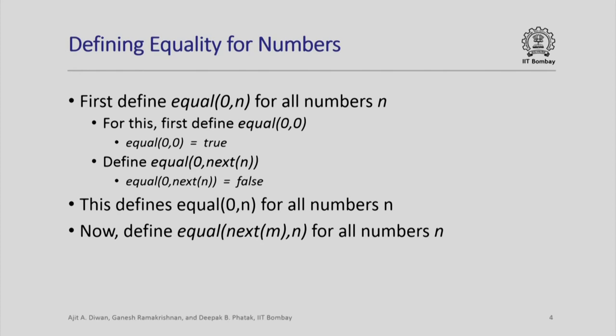Similarly, we first define equal(0, n) for all numbers n. To do that, we first define equal(0, 0) for n equal to 0, and then assuming equal(0, n) is defined, we define it for equal(0, next(n)). So equal(0, 0) is defined to be true — 0 is equal to 0 itself. And we define equal(0, next(n)) to be false: no matter what the value of n, equal(0, next(n)) is always false, because the next of any number cannot be equal to 0.